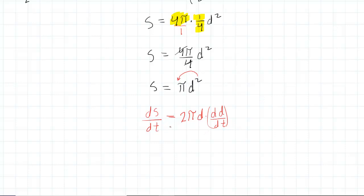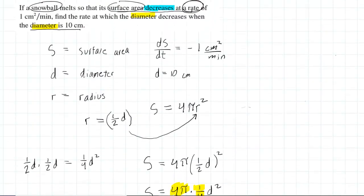Now, we have 2 out of the 3 unknowns here. Remember, if we go back up, dS/dt was negative 1 centimeter squared per minute, and then the diameter was 10 centimeters. So we'll fill those in.